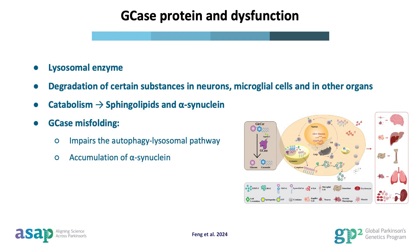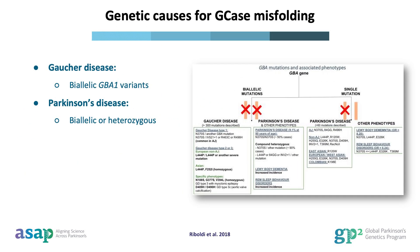Particularly in synucleinopathies such as PD. But how does GCase protein misfold, and what are the primary causes of this impairment? The impairment of GCase is mainly due to variation in the coding region of its gene, GBA1. Several variants within GBA1 have been reported to be associated with GCase misfolding. The number of copies of these variants can lead to different phenotypes: Gaucher disease is exclusively associated with biallelic variants in GBA1 — meaning the homozygous state — whereas for Parkinson's disease, GBA1 variants can occur in both heterozygous and homozygous states.